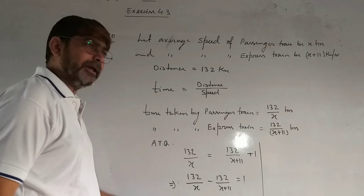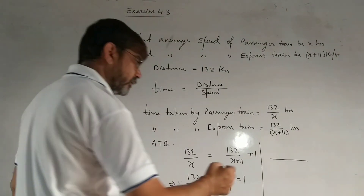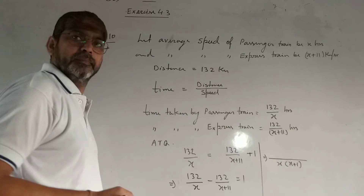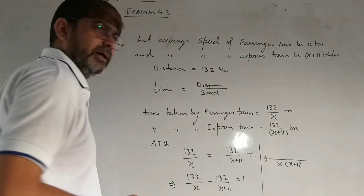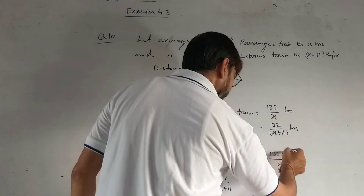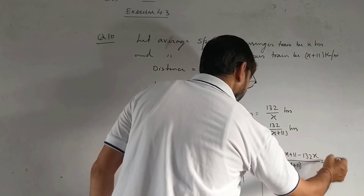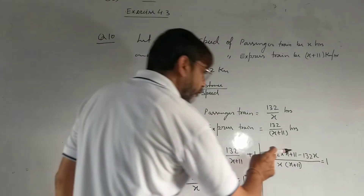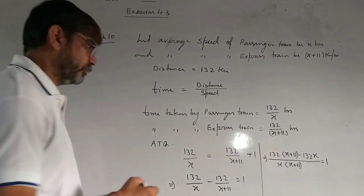अब इसमें LCM लेंगे। LCM होगा X into (X plus 11)। Numerator में क्या होगा? 132 into (X plus 11) minus 132X। Bracket लगाना पड़ेगा क्योंकि यह binomial है और दोनों में multiply होना चाहिए।